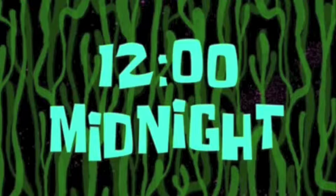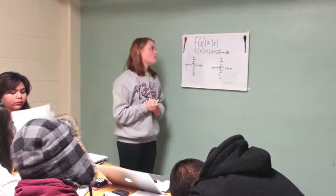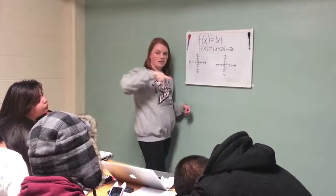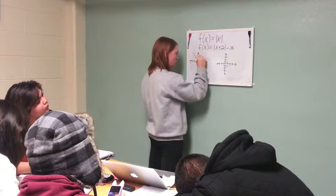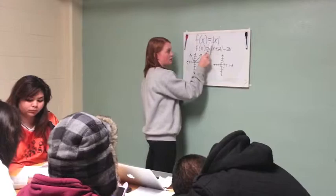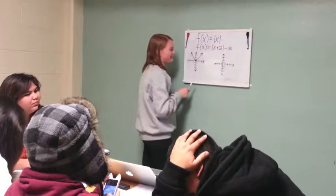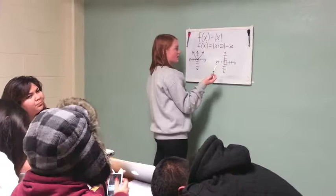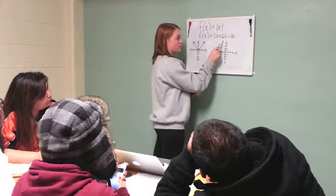And the last thing we're going to work on is graphing absolute value equations. So, let's say the original absolute value equation looks like a V. It's just two simple straight lines on the origin. The point is on the origin. And the original equation for this is just f of x or y equals the absolute value of x. That's cute.